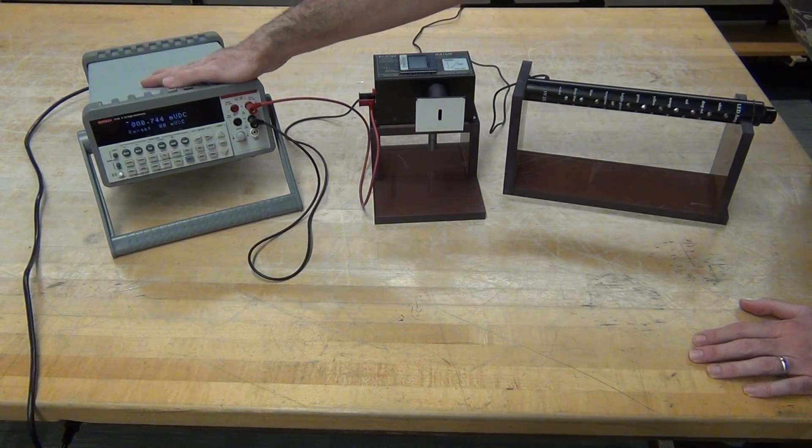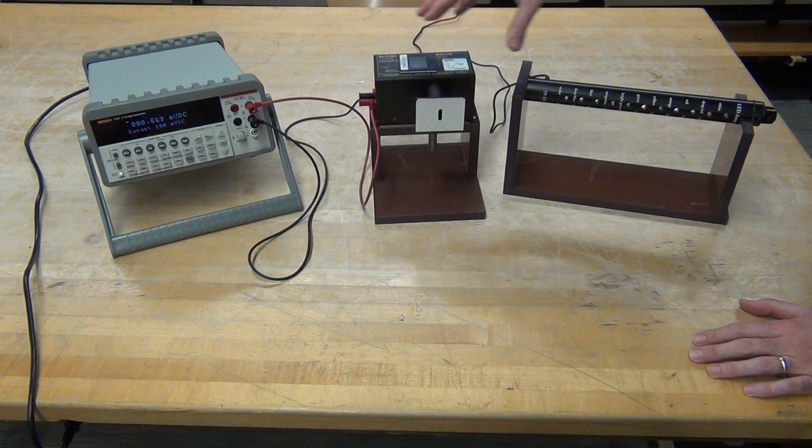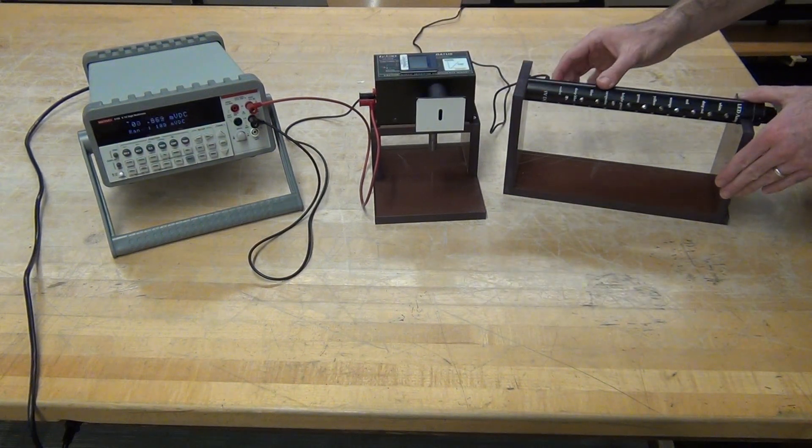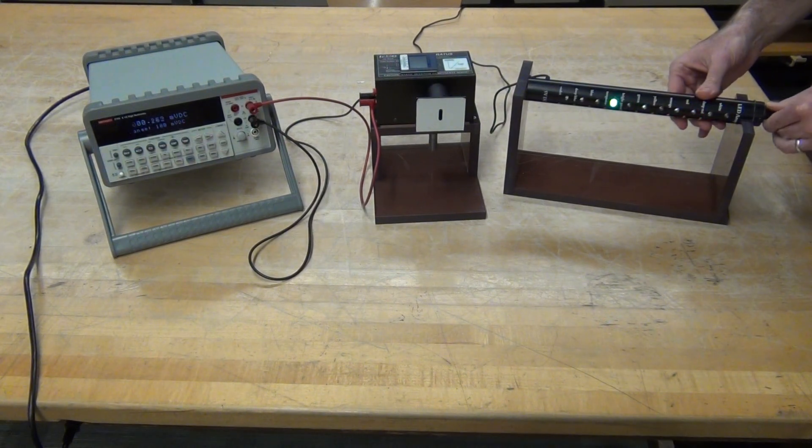You've got a Keithley multimeter, the apparatus for measuring the photoelectric effect directly, and then we're going to use an LED light tower to generate a bunch of different colors, and you can dial in each color individually.